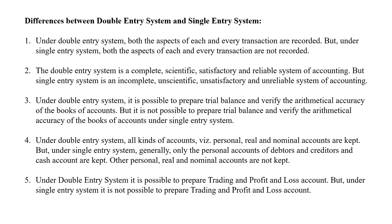The second difference: the double entry system is a complete, scientific, satisfactory and reliable system of accounting. But the single entry system is an incomplete, unsatisfactory, unscientific and unreliable system of accounting.